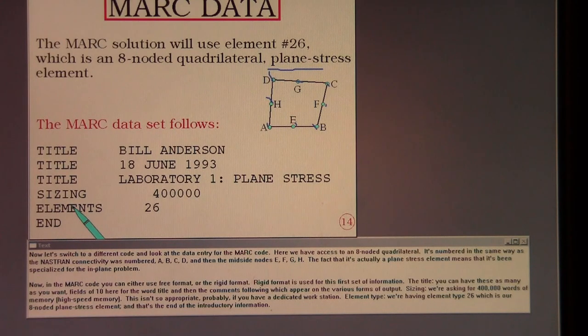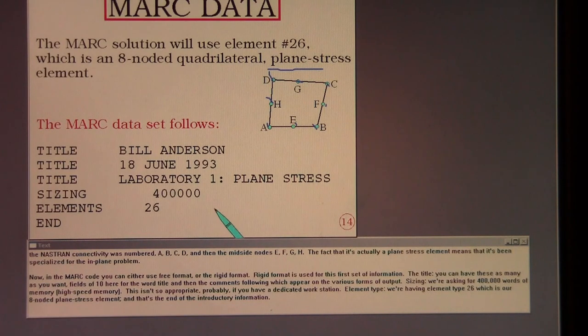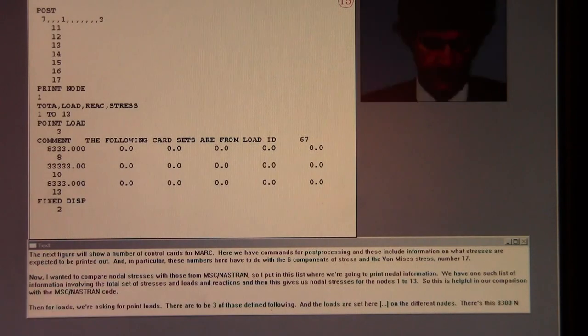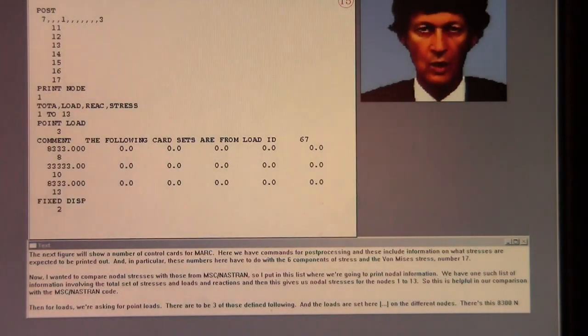Now in the MARC code you can either use free format or the rigid format. Rigid format is used for this first set of information. The title, you can have these as many as you want. Fields of 10 here for the word title and then the comments following which appear on the various forms of output. Sizing, we're asking for 400,000 words of memory, high speed memory. This isn't so appropriate probably if you have a dedicated workstation. Element type, we're having element type 26 which is our eight-noded plane stress element. And that's the end of the introductory information.